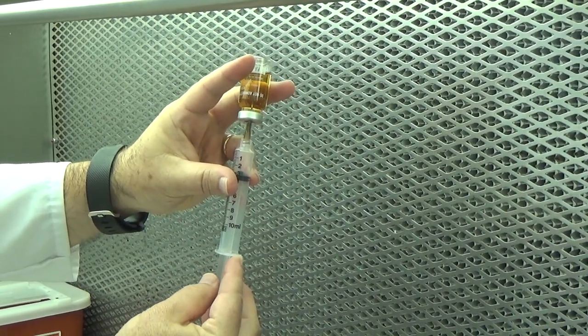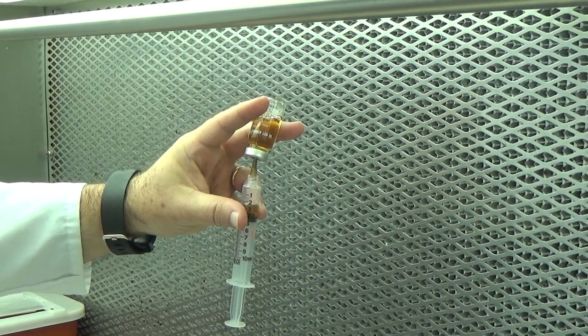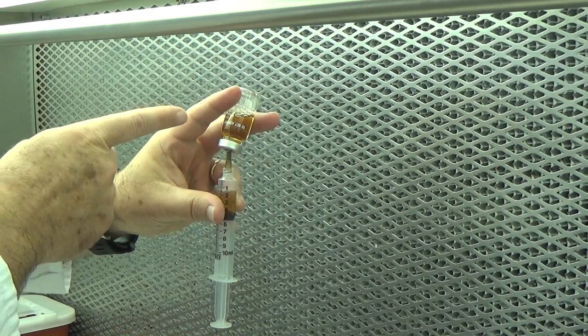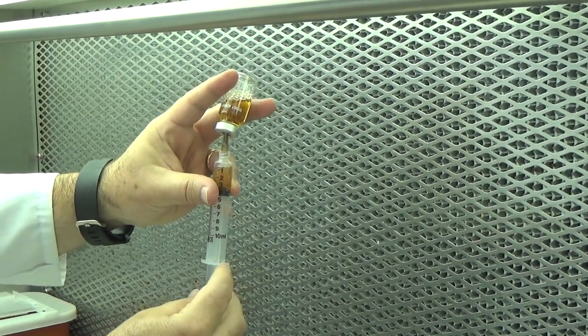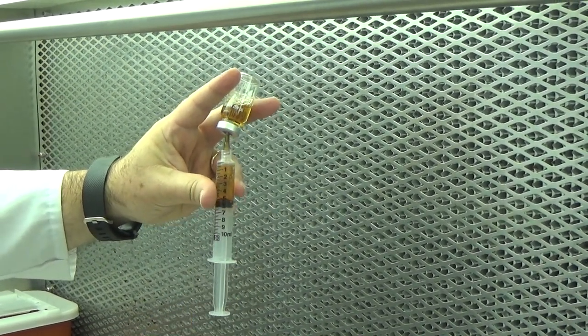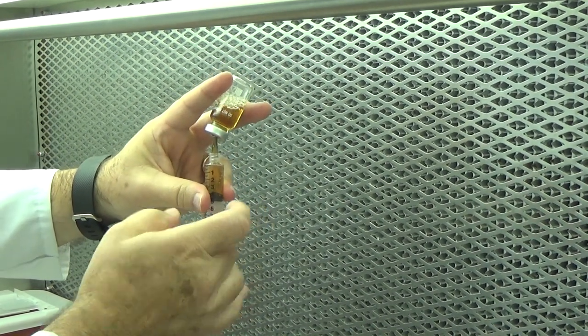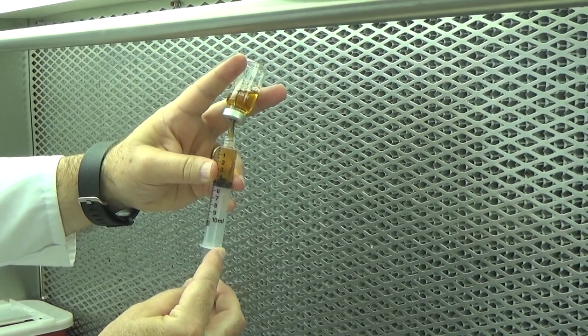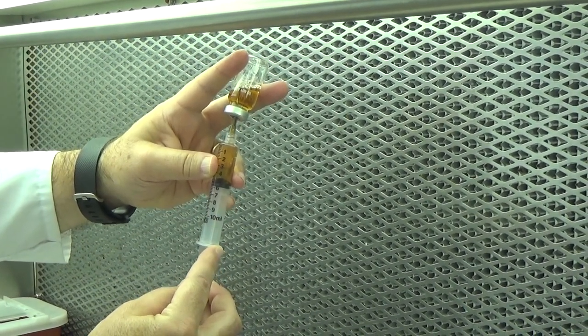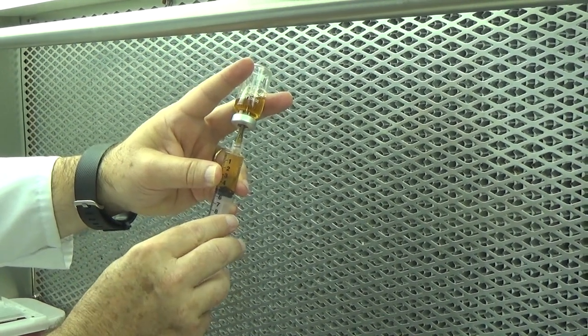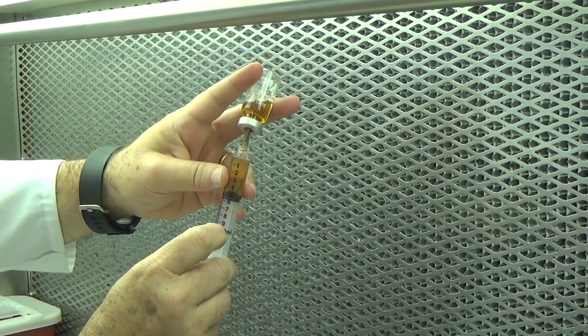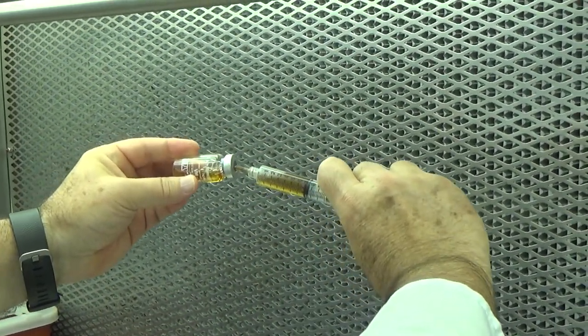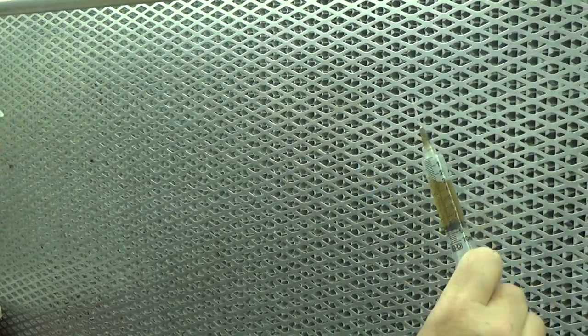And then I rotate the vial in such a manner to keep the critical site in first air. At this point, I will pull on the plunger and release. This allows me to keep a low pressure inside the vial. And once I've gotten rid of all the replacement air, I simply draw back to my desired volume.